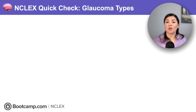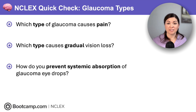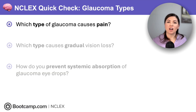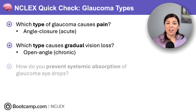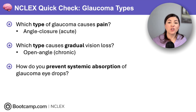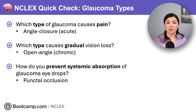So now it's time for our first NCLEX quick check. Which type of glaucoma causes pain? Acute angle closure glaucoma causes severe eye pain. Which type causes gradual vision loss? That's open angle chronic glaucoma that causes gradual vision loss or tunnel vision. And finally, how do you prevent systemic absorption of glaucoma eye drops? Punctal occlusion — the client should hold pressure to the inner canthus for one minute after administration.